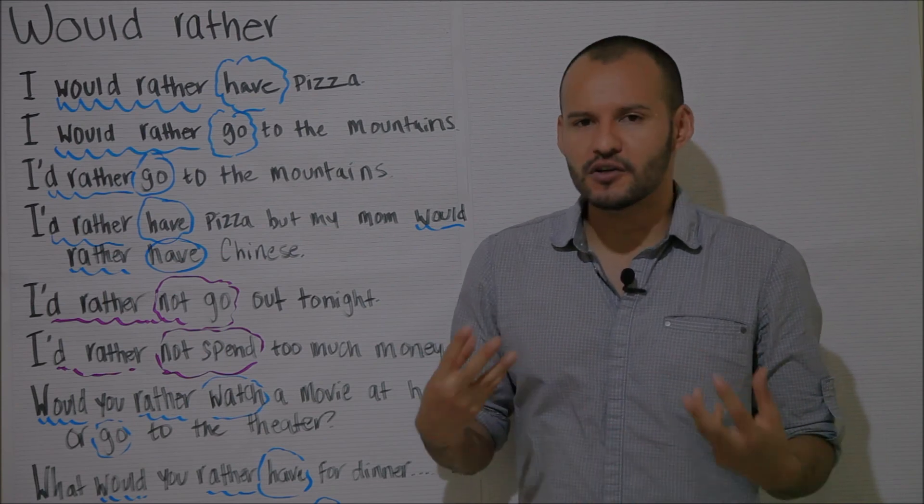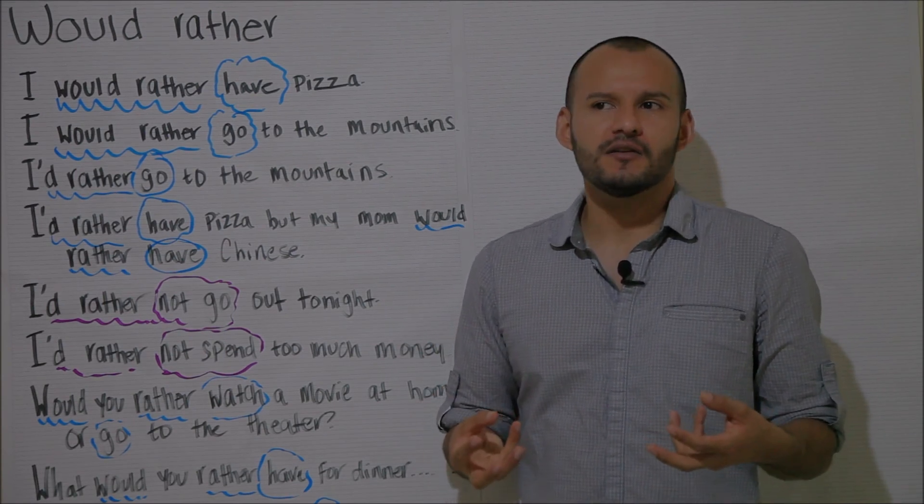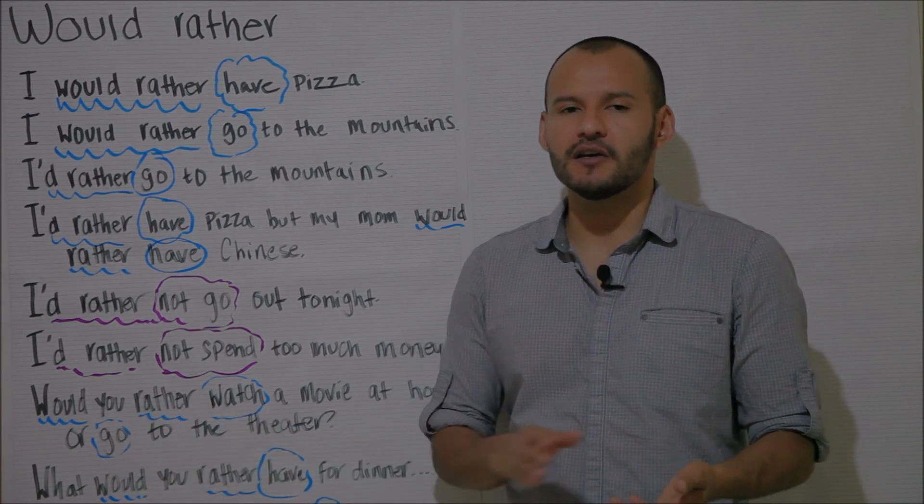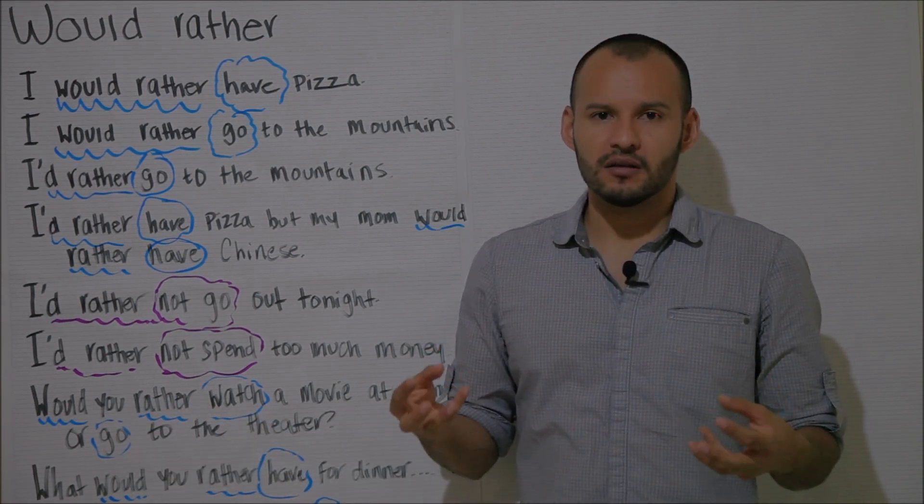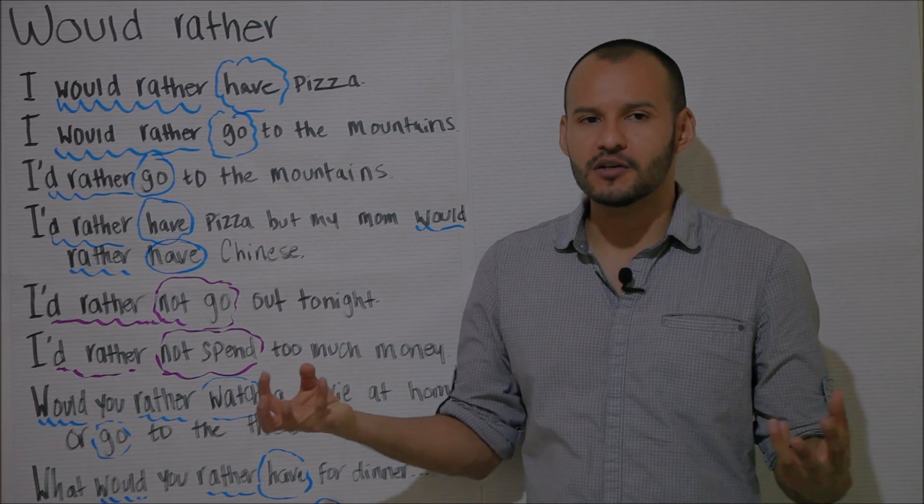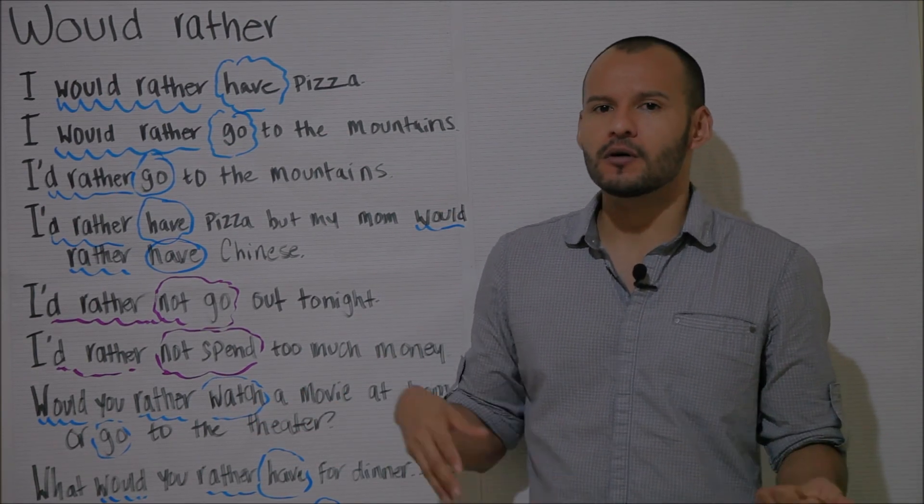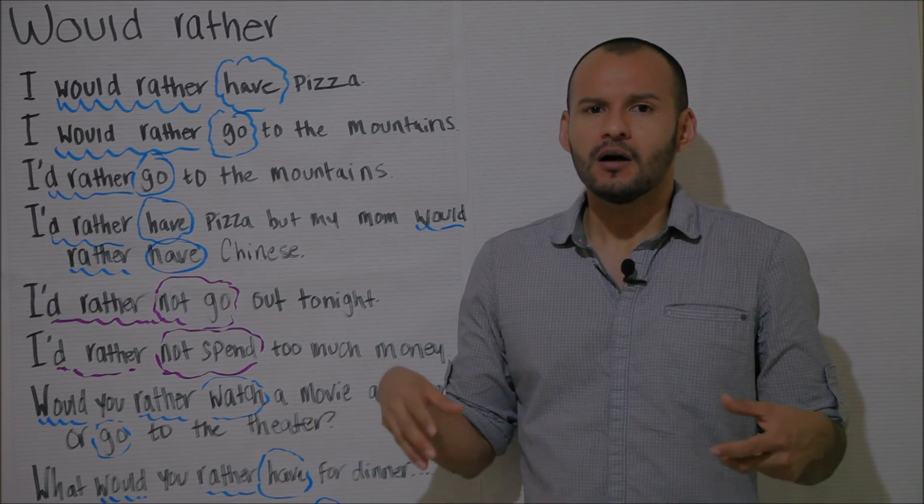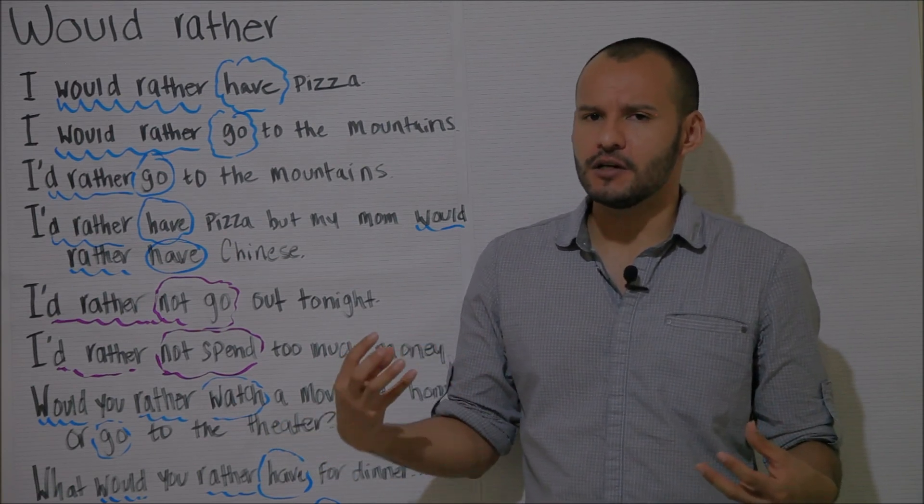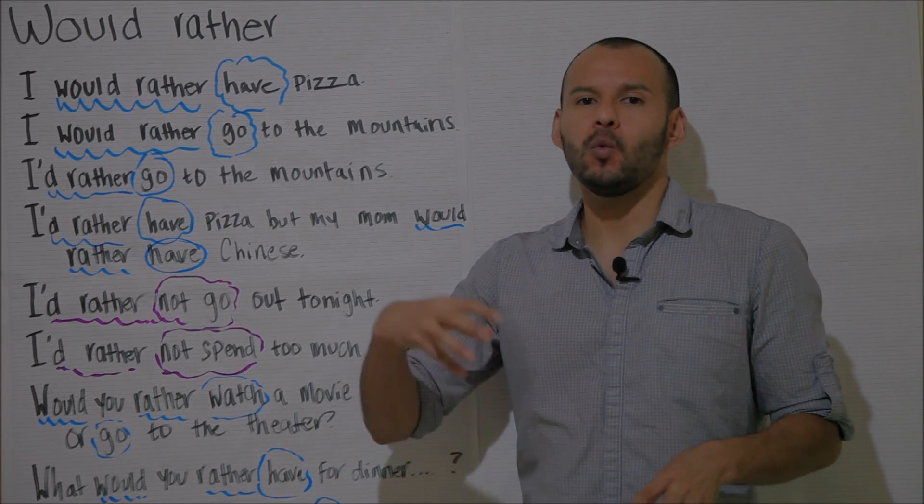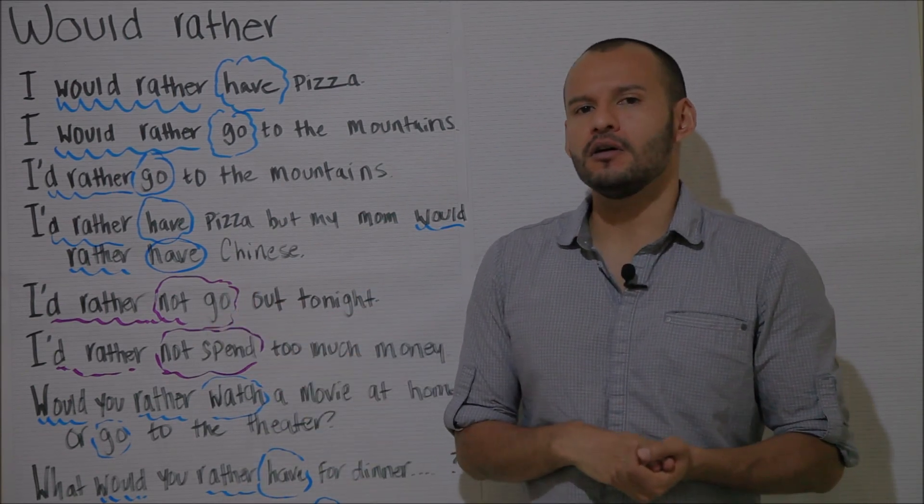And in questions, as with the majority of questions in English, you simply change the order of the auxiliary, in this particular case would, with the subject. So in a question I would say, would you rather watch a movie at home or go to the cinema? What would you rather have for dinner, Chinese or pizza? Where would you rather go on your next vacation?